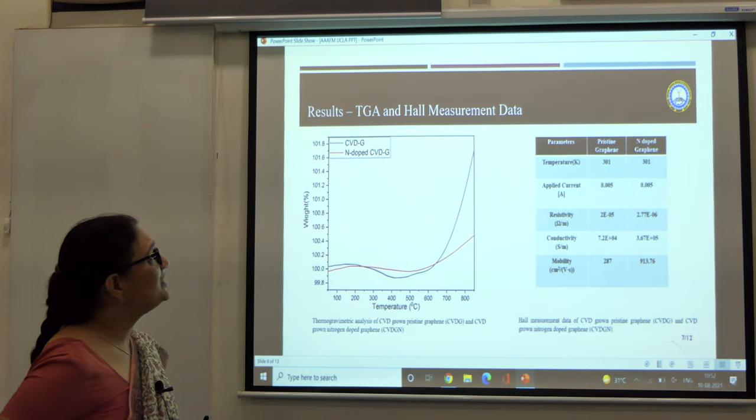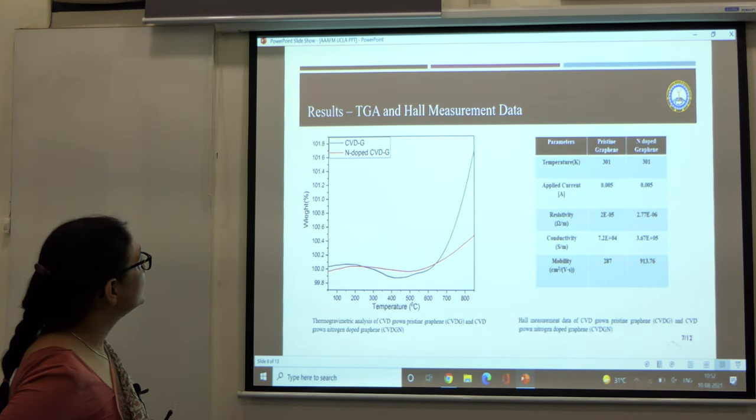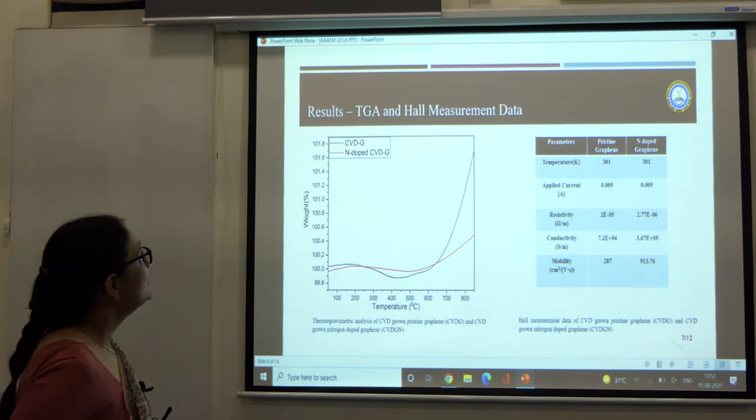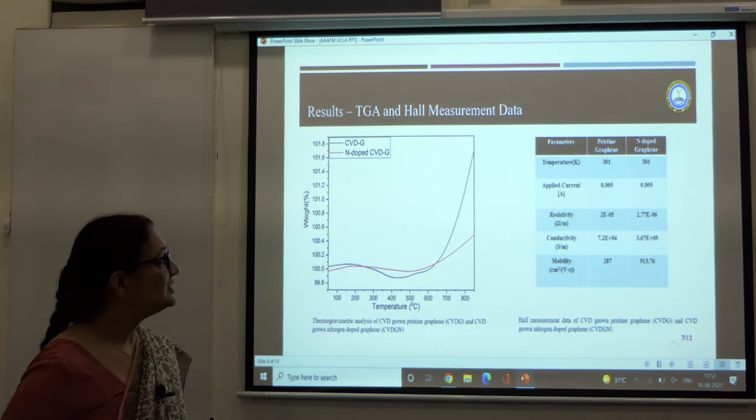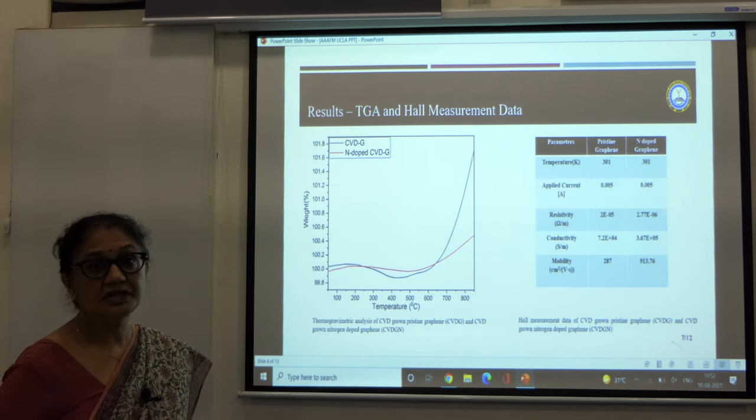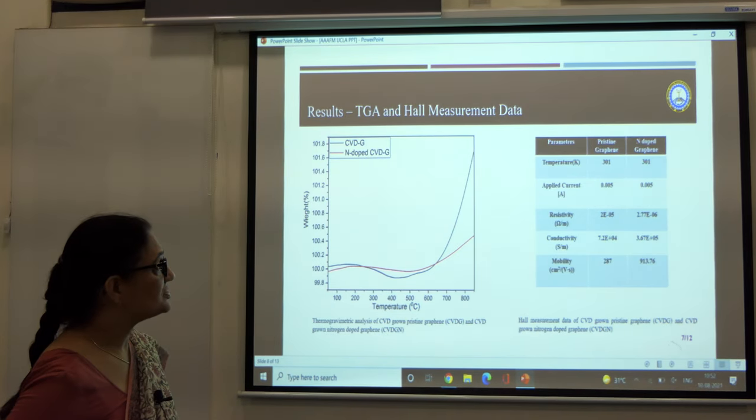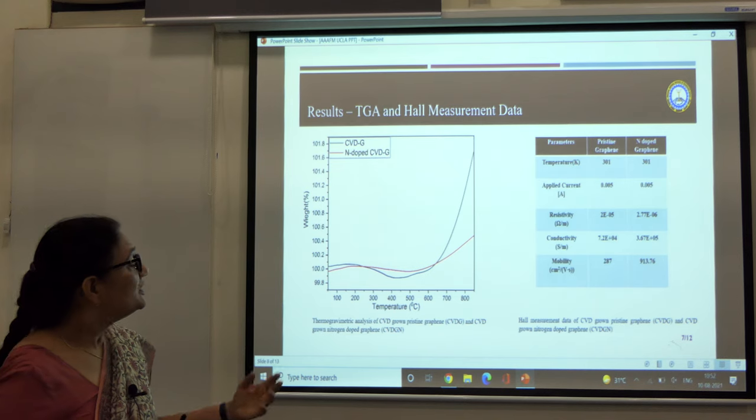Checking the thermal stability of these samples, we found that the nitrogen doped graphene, which is shown by the red curve, is a more thermally stable sample. Naturally this is a better characteristic for electrochemical applications.